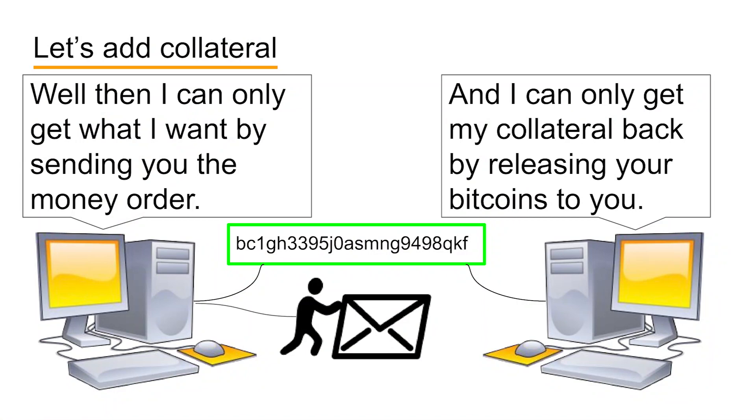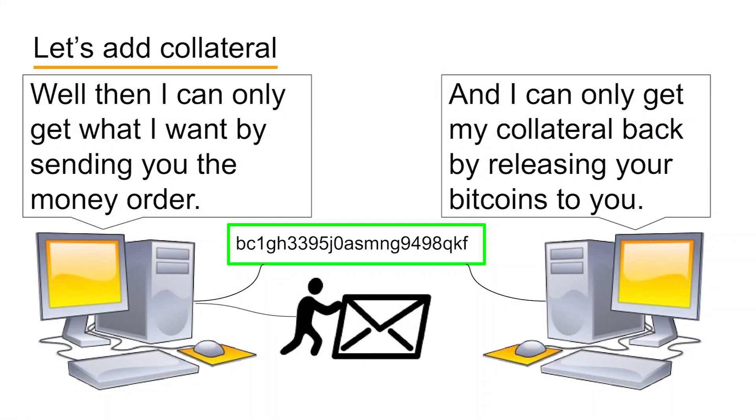Your best option — the option where you get your collateral back as well as the $500 in Bitcoins — is to send Bob a $500 money order and not try to cheat. In the second half of the trade, everything's fair because Bob has similar power over you as you had in the first half. Bob can keep your money order if he wants to try to cheat and never release the Bitcoins in the 2-of-2 address to you. This would cost you $500 in Bitcoins as well as your collateral, but Bob will also lose his own collateral, so he'll be out 15% of the value of the trade. Cheating is usually going to be unprofitable for Bob, and the best option for Bob is to release the Bitcoins to you and get his collateral back.